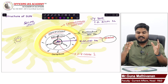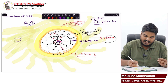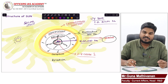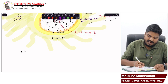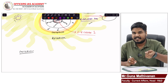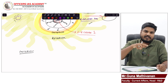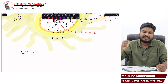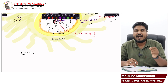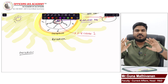So the sun has an interior and an exterior. The interior is divided into core, radiation zone, and convection zone. The outer part — the exterior — is divided into photosphere, chromosphere, and corona. That corona extends in the form of solar wind.